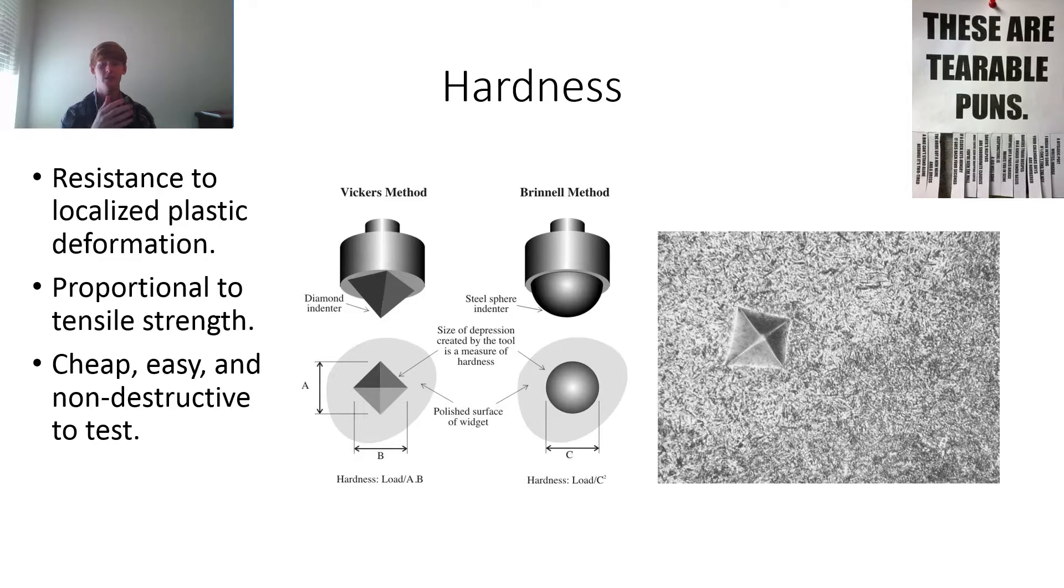So you can find out the ultimate tensile strength of material by using a hardness test. And hardness tests in general, they're really cheap and easy. If you want to do a true tensile strength test, you pretty much have to pull apart a material until it breaks or until it reaches its maximum, which is costly for real world application, it's really expensive. Hardness test is really cheap and easy, and it doesn't even break the material. These indentures are very small. So it's really nice to have these.